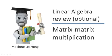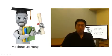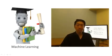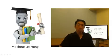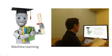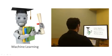In this video we'll talk about matrix-matrix multiplication, or how to multiply two matrices together. When we talk about the method in linear regression for solving for the parameters theta 0 and theta 1 all in one shot — without needing an iterative algorithm like gradient descent — matrix-matrix multiplication is one of the key steps you need to know. So let's start with an example.